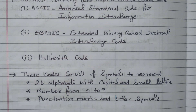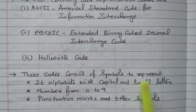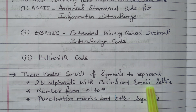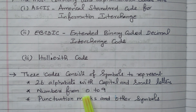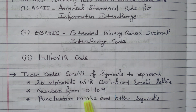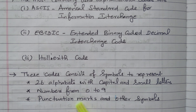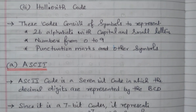These codes consist of symbols to represent: 26 alphabets with both capital and small letters, numbers from 0 to 9, punctuation marks and other symbols — all the symbols available on the keyboard are available in this code. In this video we will see the ASCII code; the Extended Binary code is available in a separate video.